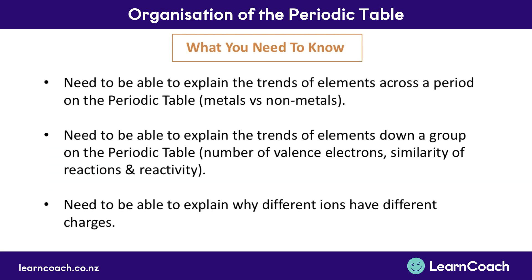That brings us to the end of the video. You need to be able to explain the trends of elements across a period — specifically the differences between metals and non-metals. You also need to explain the trends going down a group: the number of valence electrons, similarity of reactions, and reactivity. Finally, you need to explain why different ions have different charges, as all three of these topics are big end-of-year exam questions. Thanks for listening.